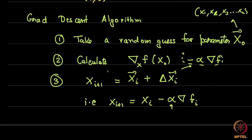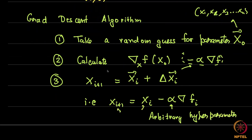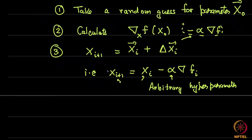Alpha is an arbitrary parameter — we call it a hyper parameter because x are the parameters we are solving for. In machine learning this is called the learning rate. For now, just assume it is a constant. Alpha decides how large the steps we take are.